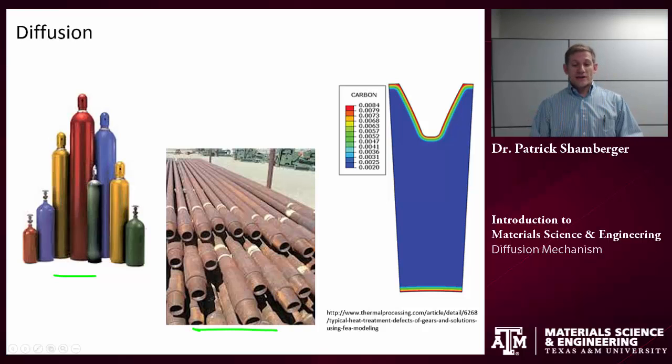Hydrogen embrittlement is a big problem in a lot of gas and oil pipes. So if I have a metal pipe and hydrogen atoms or molecules diffuse into that metal, they make it more brittle and more susceptible to failure. So again, I need to know something about diffusion rates in solid substances.